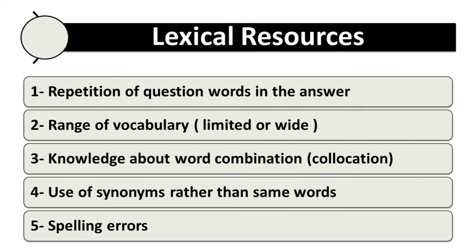The fourth area is that you should try to use different synonyms — try not to use the same words again and again. For example, if your question is about students, instead of repeating the word 'student' you can replace it with 'pupil' or 'learner,' avoiding repetition. The last one is spelling errors — you should try to avoid spelling errors if you want to get a good band score in lexical resource, because making many spelling mistakes will not allow you to have a good band score.